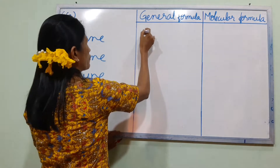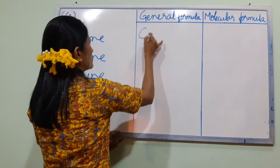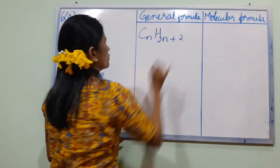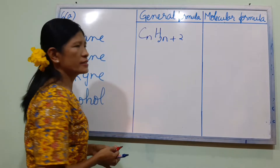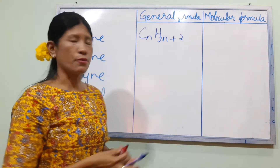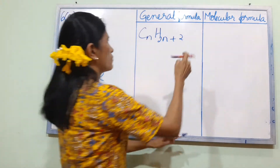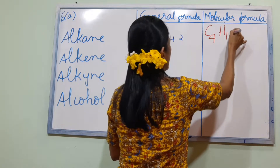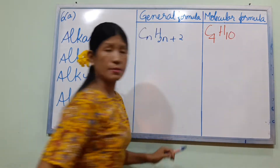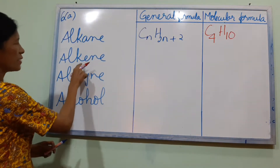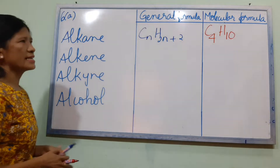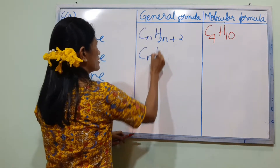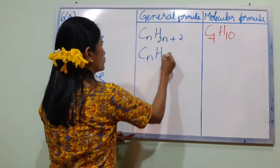Alkane has the general formula CnH2n+2, so the molecular formula for the 4-carbon alkane is C4H10. Alkene has the general formula CnH2n.